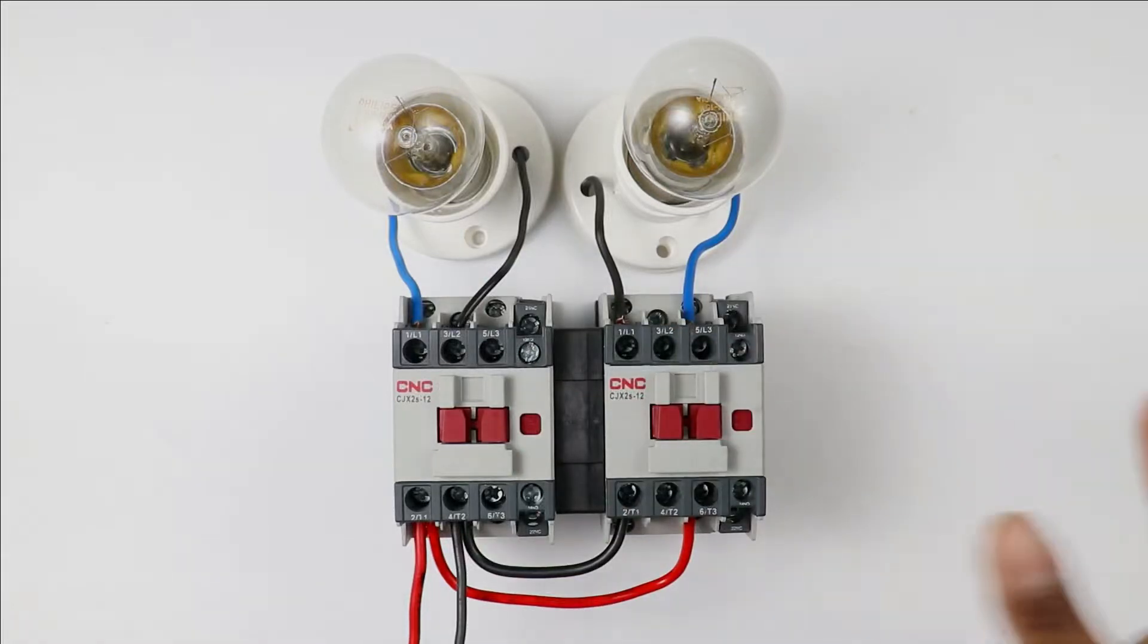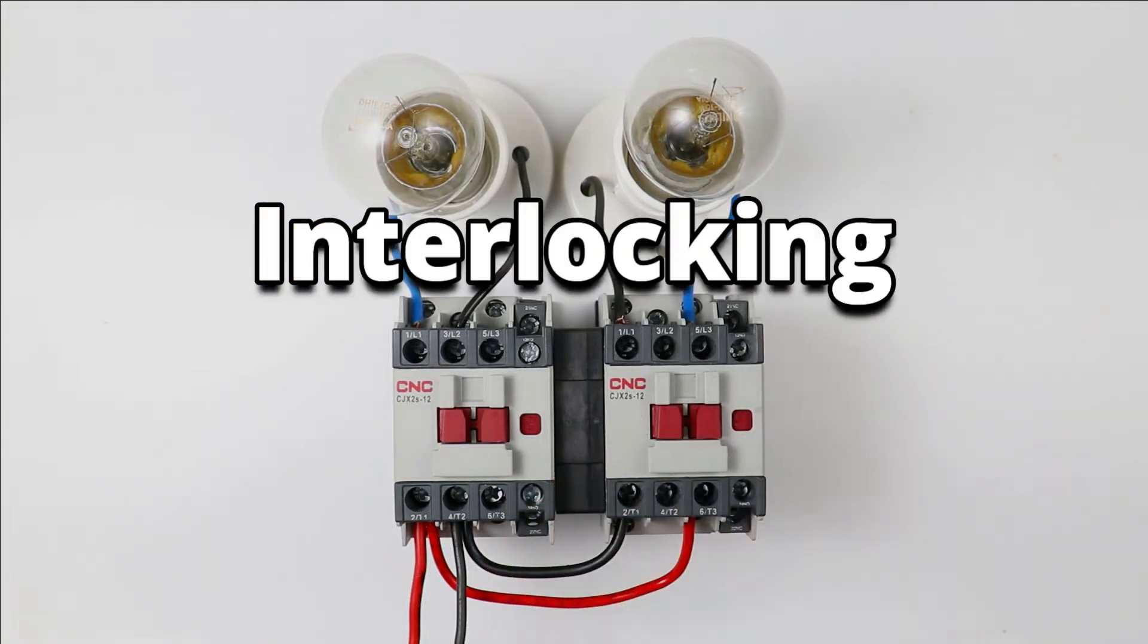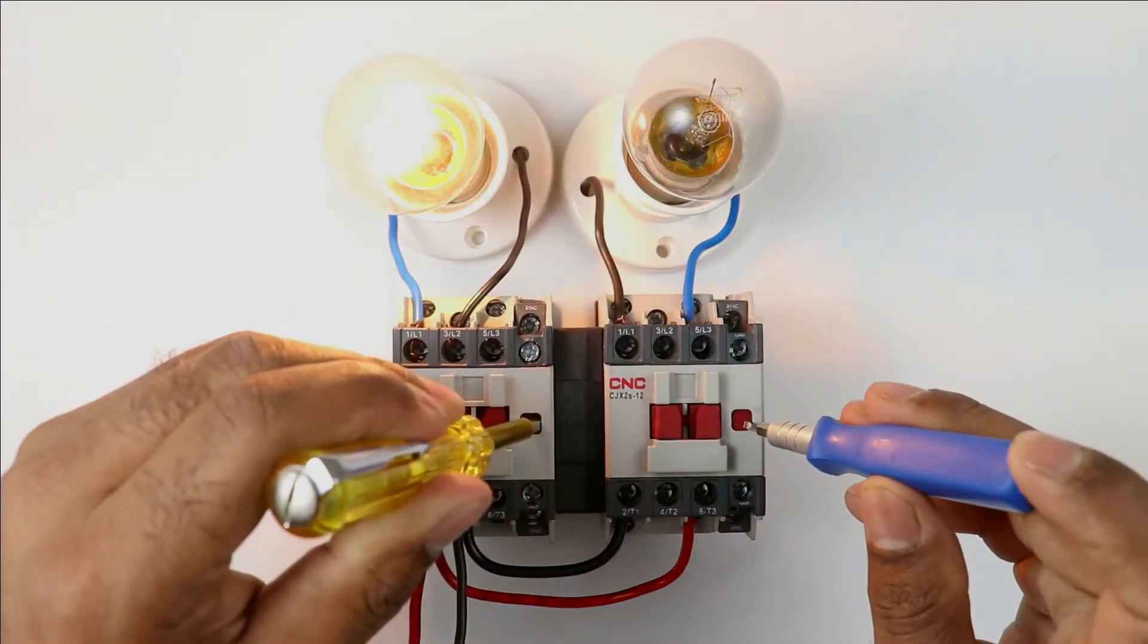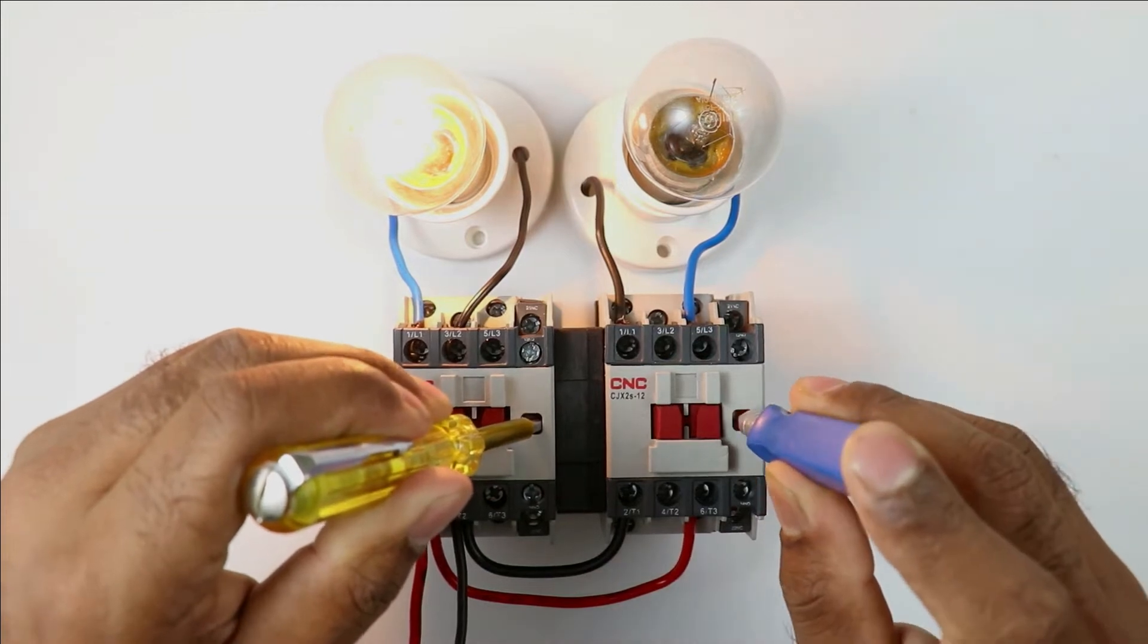Today in this video we are going to learn how two contactors get mechanically interlocked. Like if I turn on this contactor and after this if I try to turn on the other contactor, then it won't get turned on.